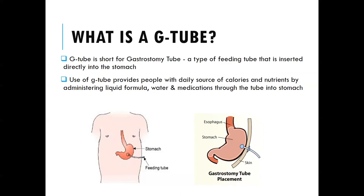The use of a G-tube can help provide a daily source of calories and nutrients through liquid formula — either a prescription formula your doctor writes for you, or a formula a patient makes at home by blenderizing or pureeing their own food. You can also put water through the feeding tube for hydration, and medications, directly into the stomach.